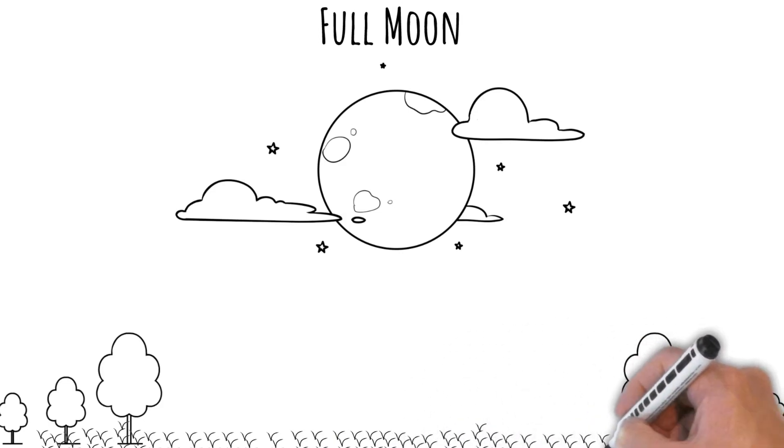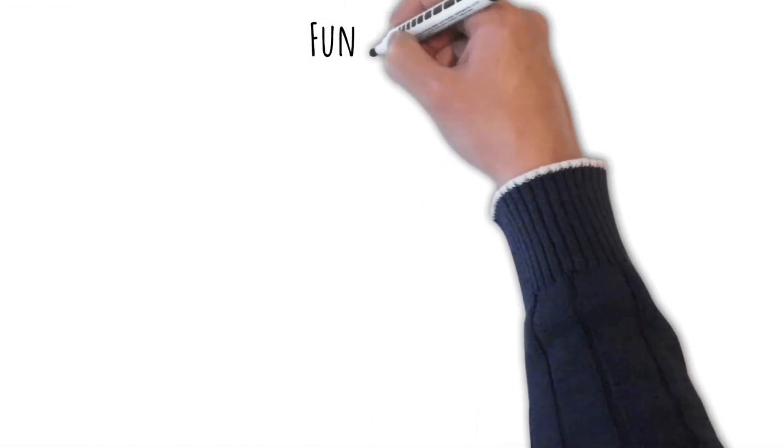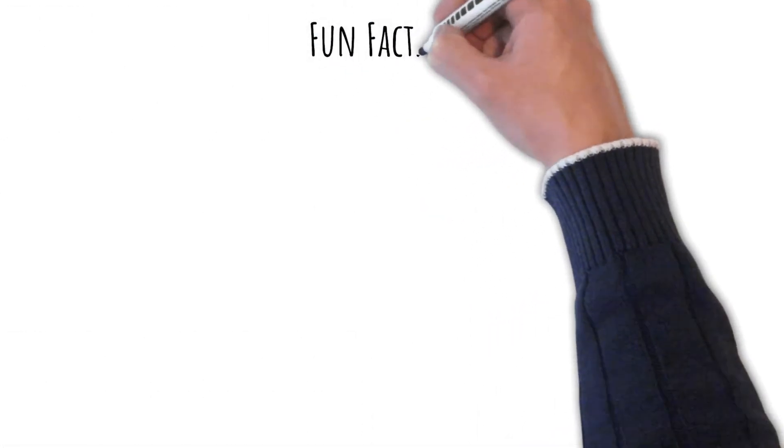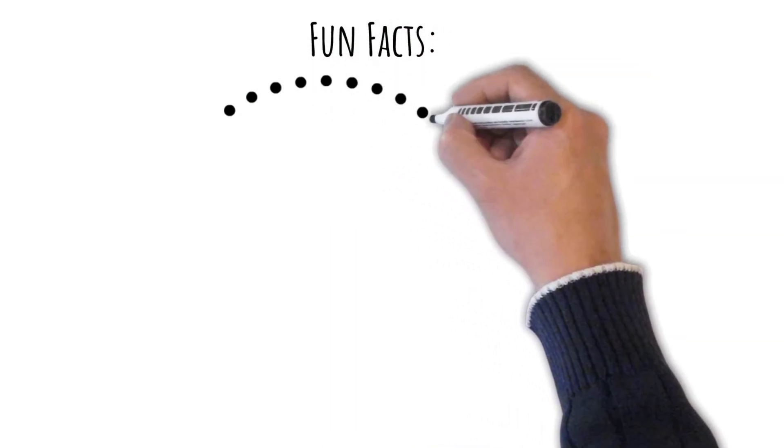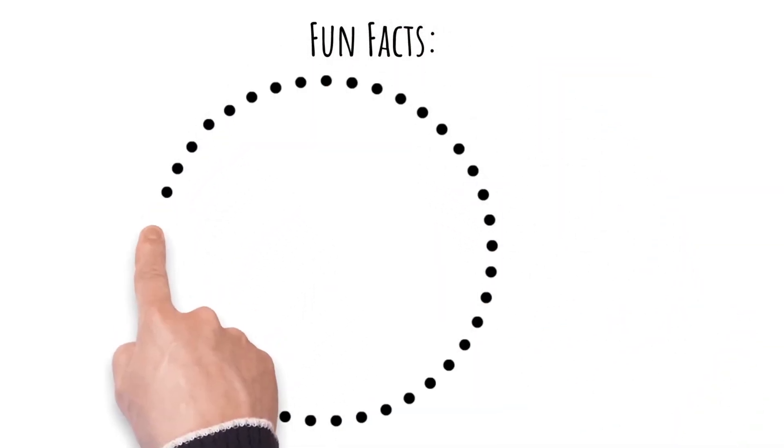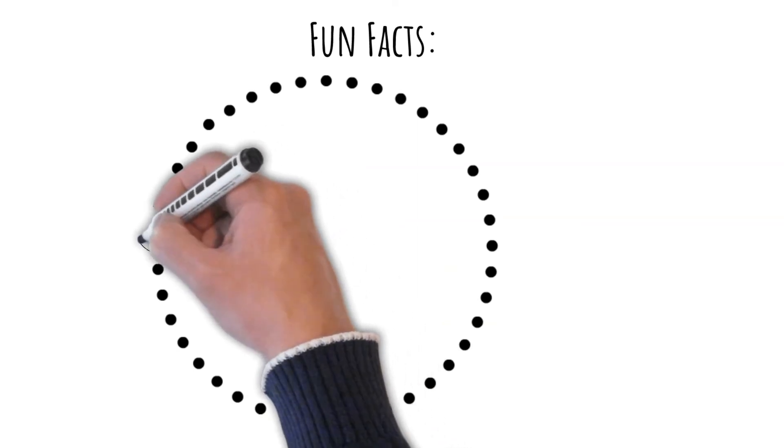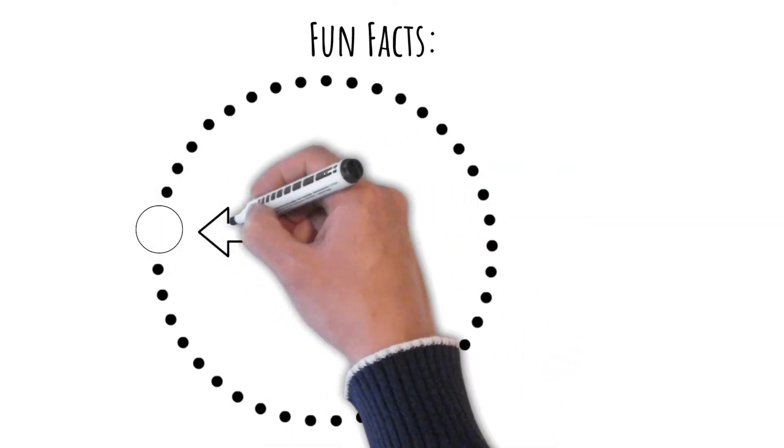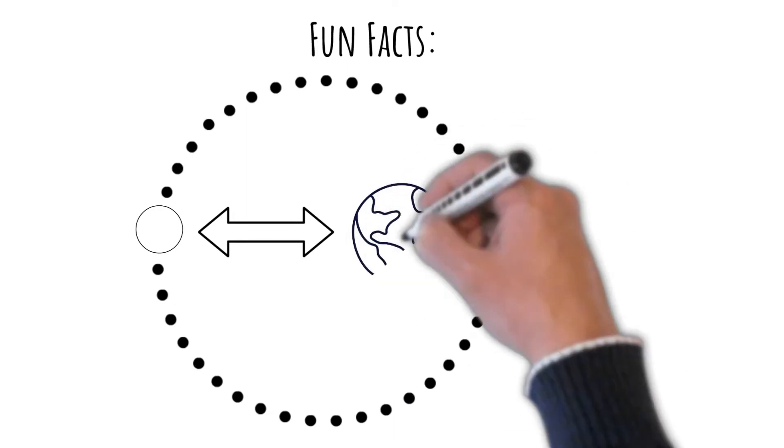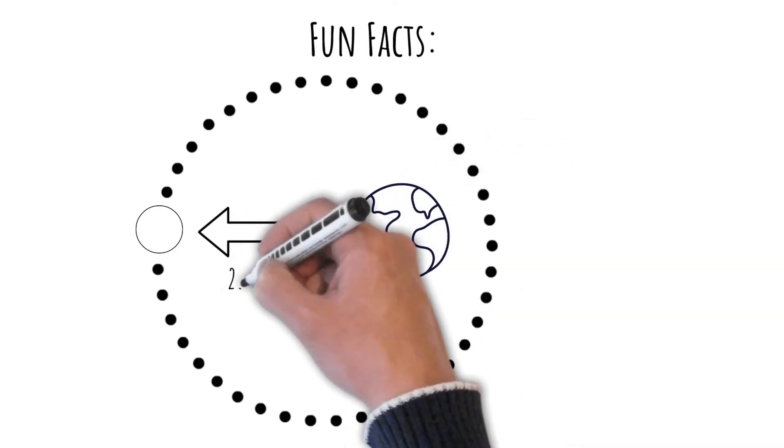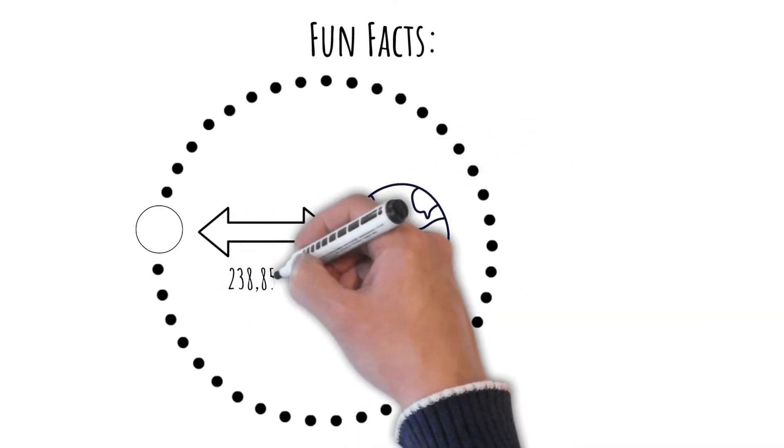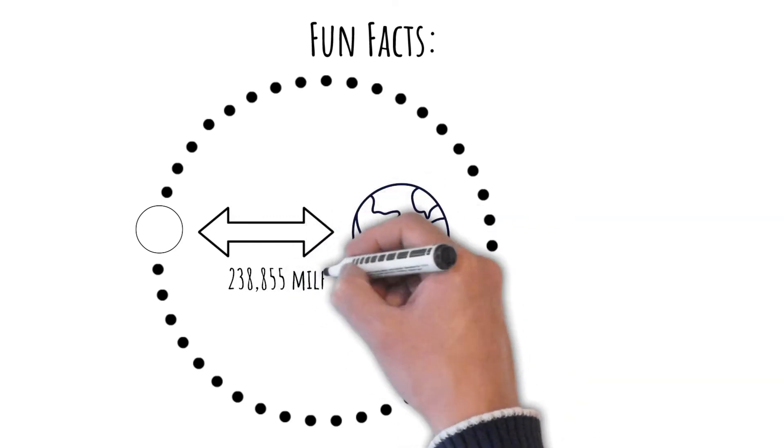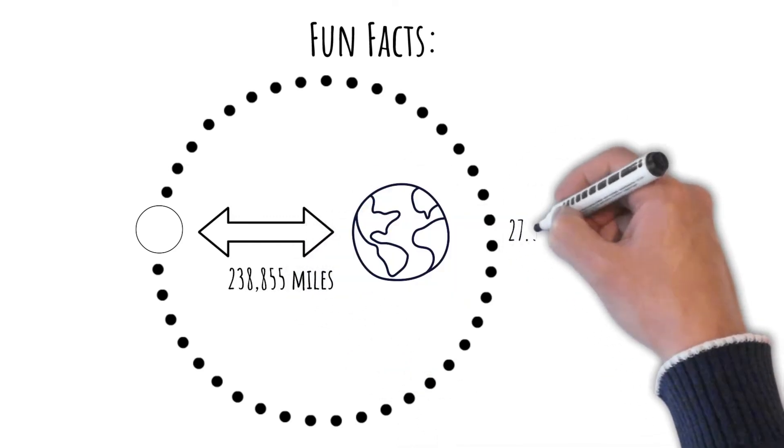And before we go, I wanted to give you a few quick little facts about the moon. The moon is 238,855 miles from Earth. It travels around the Earth every 27.322 days, which is close to the amount of days in a month.